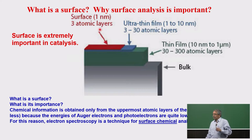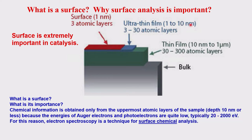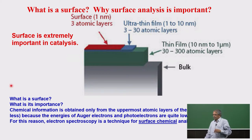The next level is the ultra-thin film at 3 to 30 atomic layers, around up to about 10 nanometers. Further deeper is around 30 to 300 atomic layers, which is 10 nanometers to about 1000 nanometers — up to about a micron. Beyond this is known as the bulk. So the surface refers to the top few nanometers, maybe 1 to 3 nanometers — the top few atomic layers.